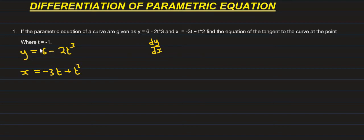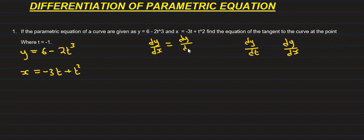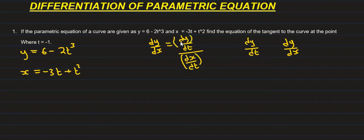We express dy over dx in terms of T. dy over dT divided by dx over dT. So dy over dx equals dy over dT divided by dx over dT.